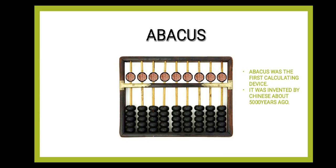The first one is Abacus. Abacus was the first calculating device. It was invented by the Chinese about 5000 years ago. As you can see in this picture, this is the device which is called Abacus. Simple calculations like addition and subtraction can be performed using this device. It is still in use in different parts of the world.